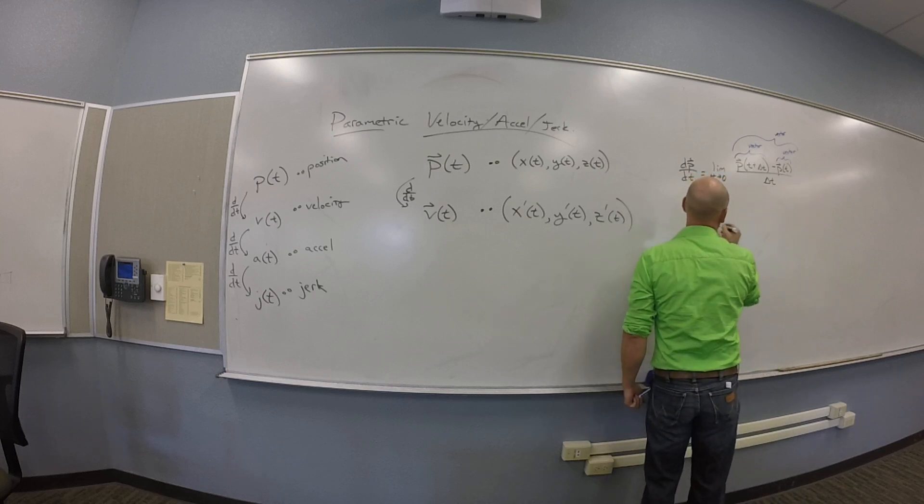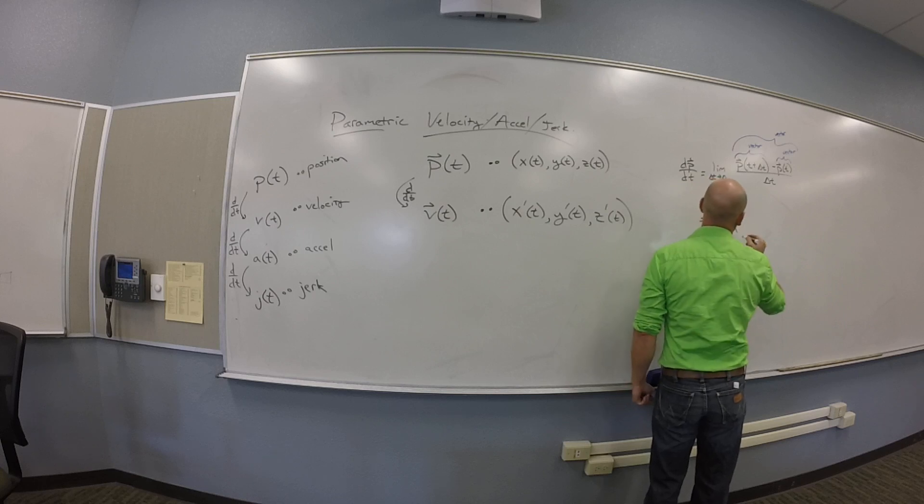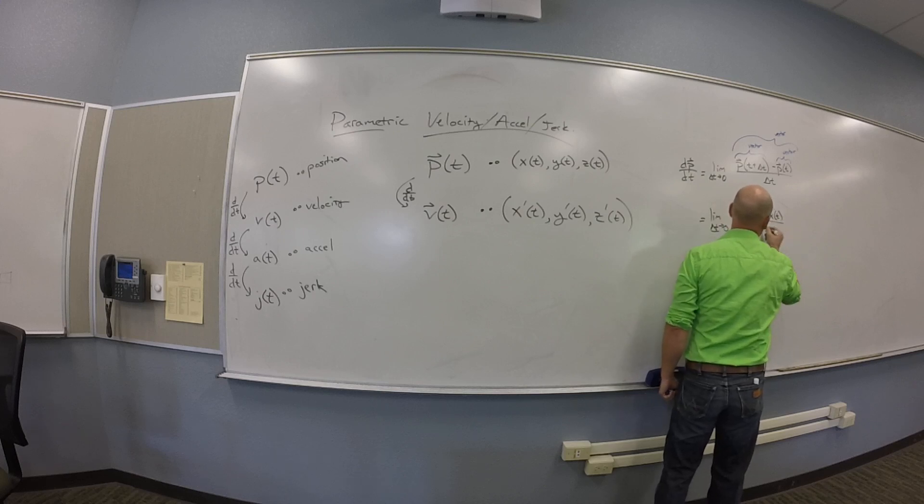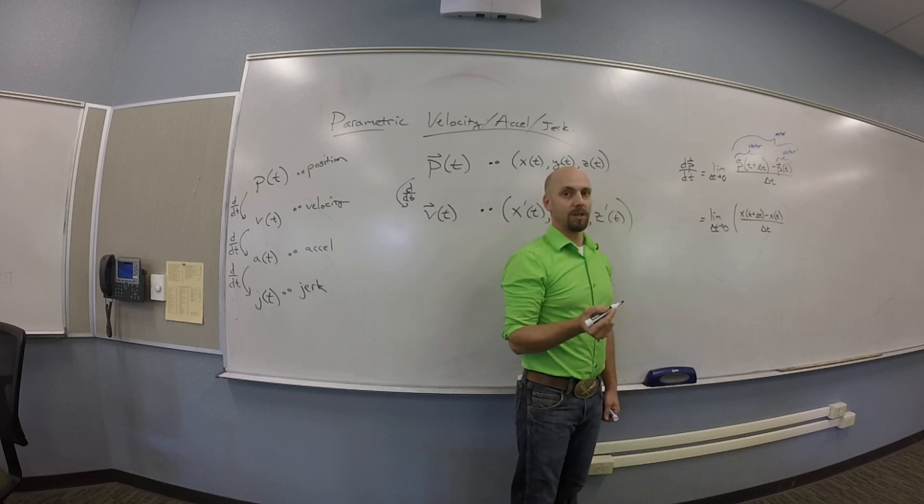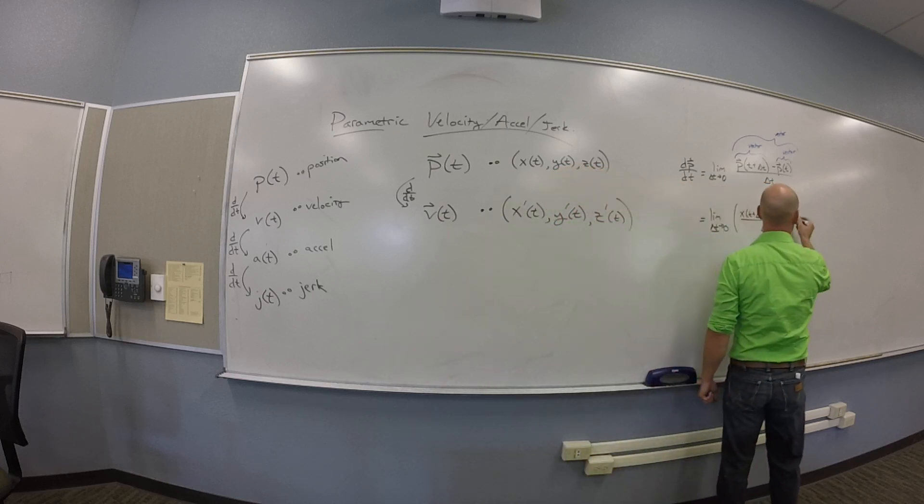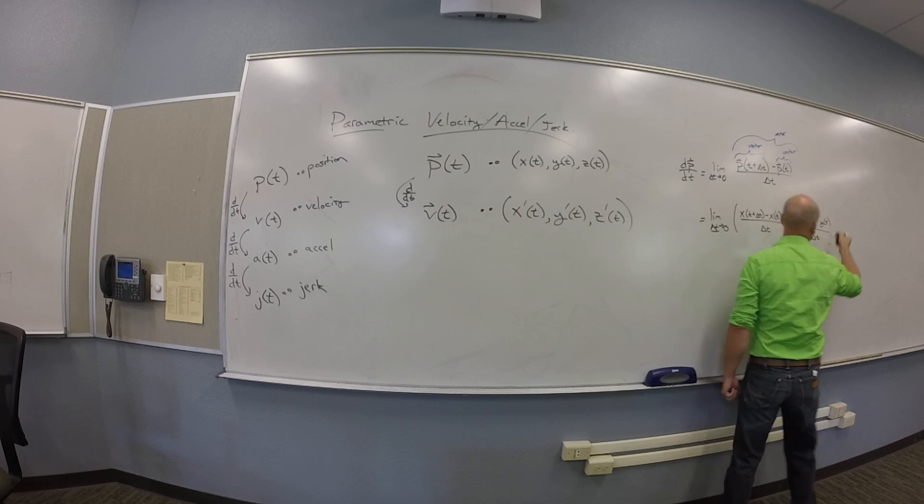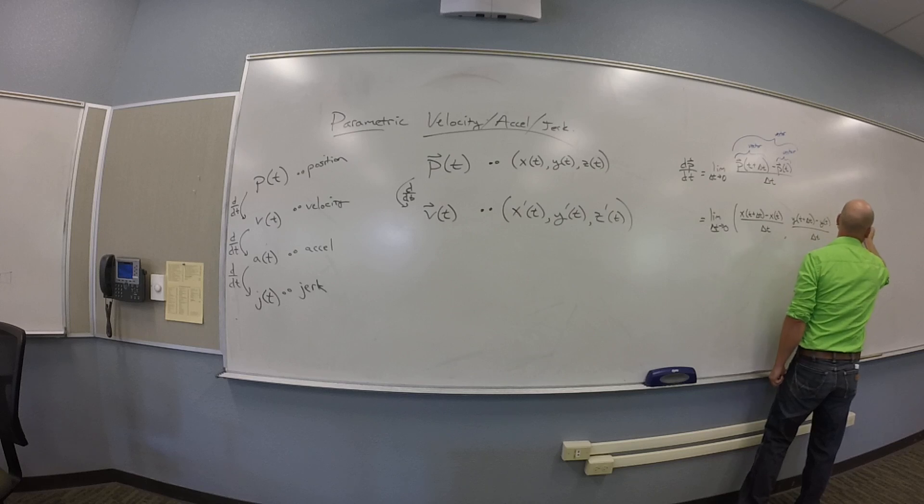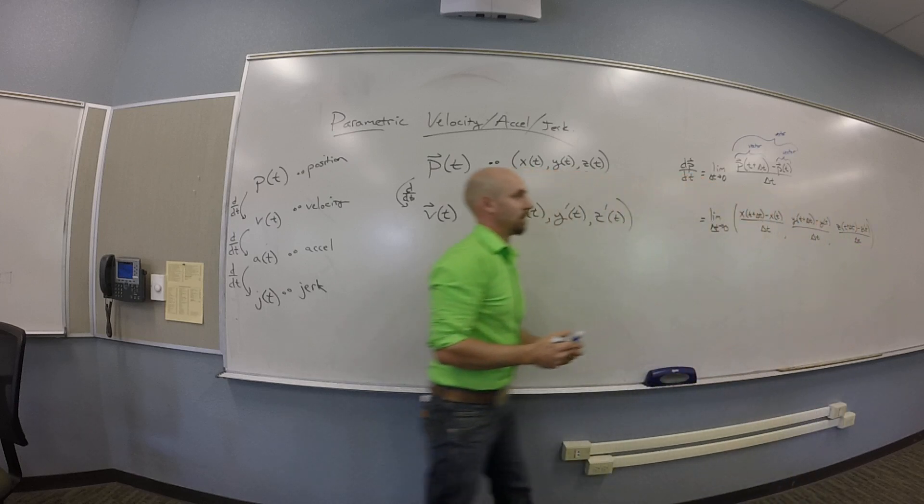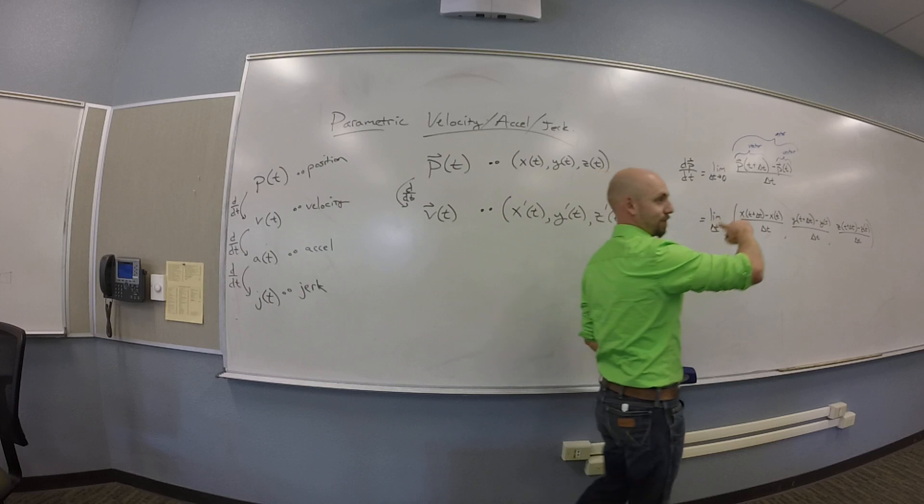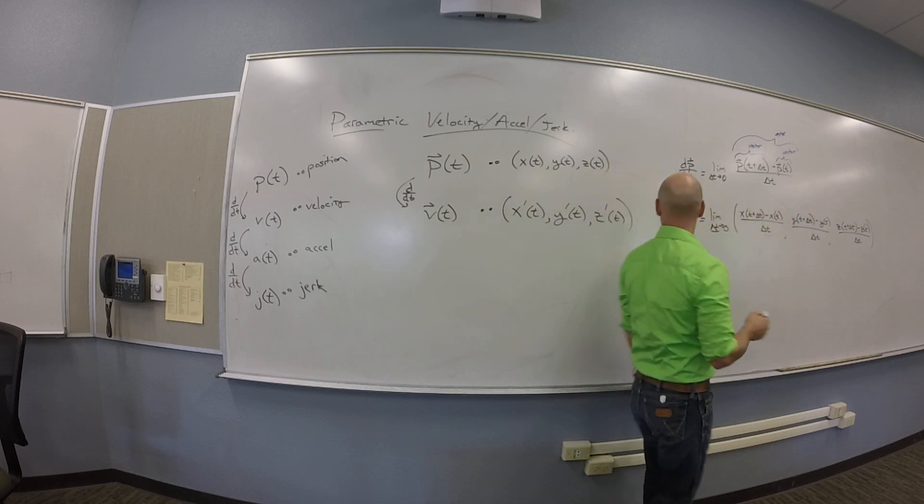I've got the limit, change in t going to zero, of in the first slot I'm going to get x of t plus delta t minus x of t all over delta t. And then I'll get comma y of t plus delta t minus y of t all over delta t. And in my last slot I'll have z of t plus delta t minus z of t all over delta t. And then maybe magic would allow me to bring the limit in there and then I would get this.